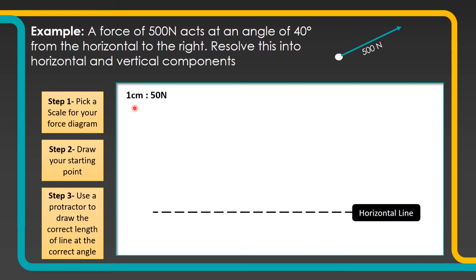The scale I'm going to use this time is slightly larger — 1 centimetre to 50 newtons — to be able to fit that onto my piece of paper. So my 500 newton force is going to be 10 centimetres long. My starting point this time is to the left because my diagram is going up to the right.